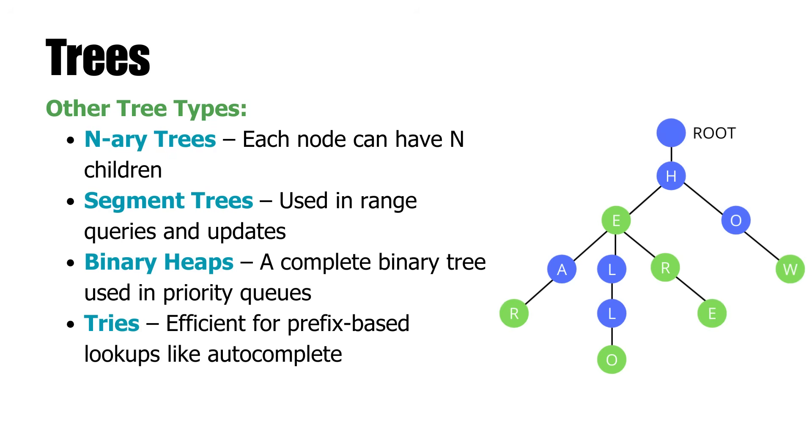Other important kinds of trees include, for instance, N-ary trees where a node has more than two children. They are implemented to handle generalized hierarchical data such as HTML document representations. Segment trees are binary trees that are employed in range queries, especially in competitive programming competitions. Binary heaps, a complete binary tree, become necessary when implementing priority queues. And last but not least, tries, or prefix trees, enable quick searching. For example, auto-completion in search engines or dictionaries.